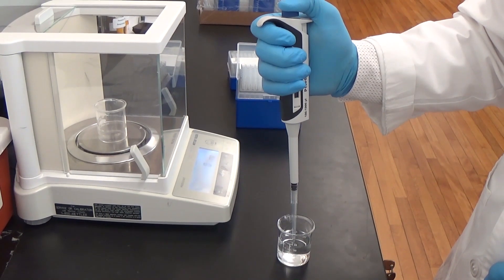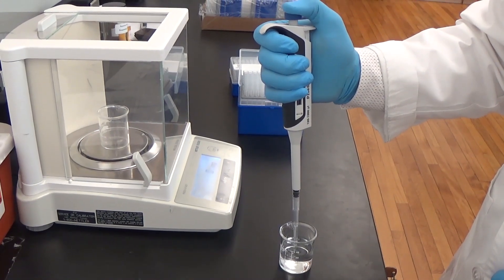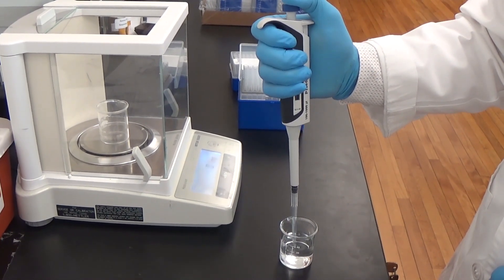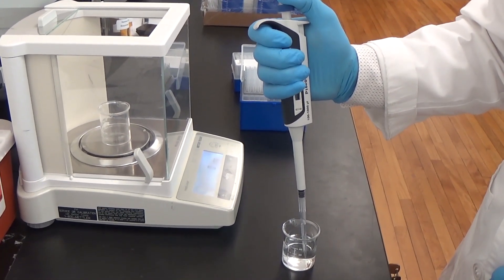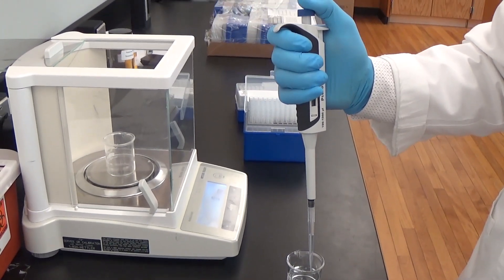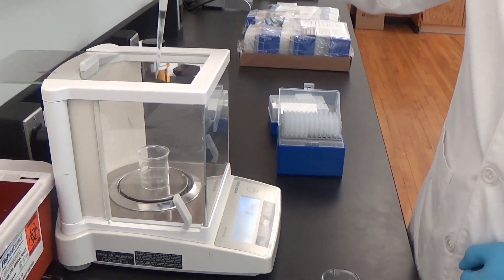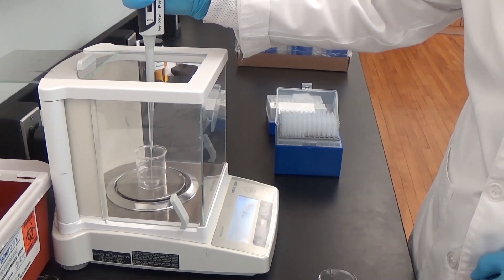This micropipette has been calibrated by the manufacturer. Now we will check the delivery accuracy of the micropipette using deionized water and an analytical balance. This can simply be done by checking the weight of any specific volume.